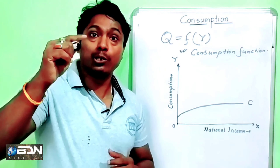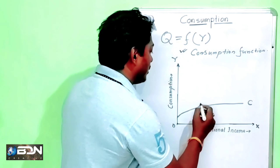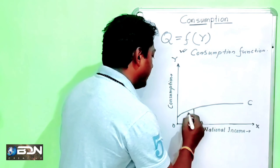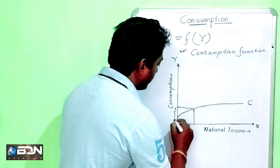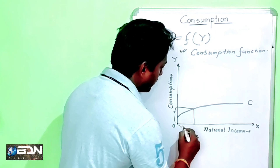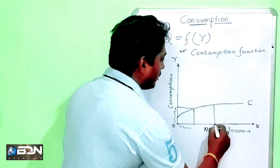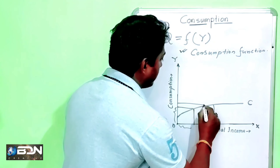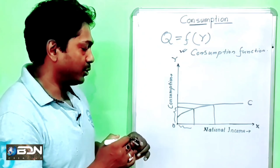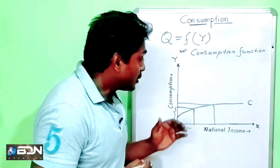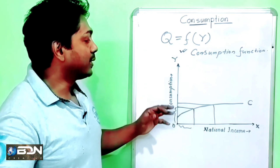So, let me denote this formally. C is the consumption. C depends on disposable income. Y is the disposable income here. So, C is a function of Y — this is what is called the consumption function. It is very simple.